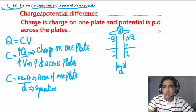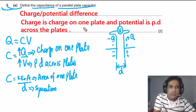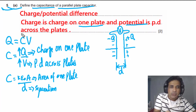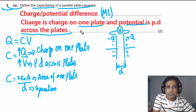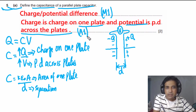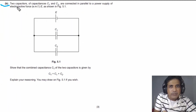For your written answer, state: capacitance equals charge divided by potential difference, where charge is the charge on one plate and potential difference is across the plates. The first mark (M mark) is awarded for writing C = Q/V with those definitions. The second mark (A mark) is for defining what Q and V represent specifically.